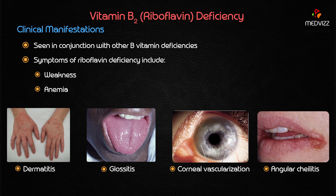Corneal vascularization and angular cheilitis — that is, cracking at the corners of the lips — are the predominant manifestations, seen in approximately 100 percent of riboflavin deficiency cases. Weakness and anemia are also important clinical manifestations of riboflavin deficiency.